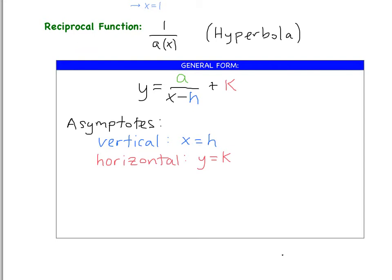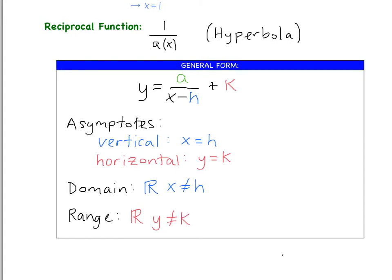We also need to talk about domain and range. The domain of our function will always be all reals except x cannot equal the h value, because that's when it's undefined. The range is going to be all reals except y cannot equal the k value, because that's the value of y for which the function is undefined. Let's draw two planes and talk about what these graphs look like.